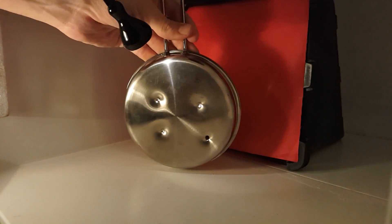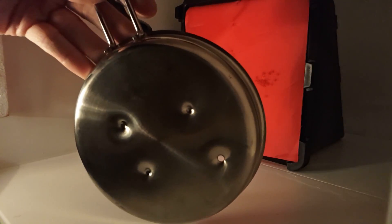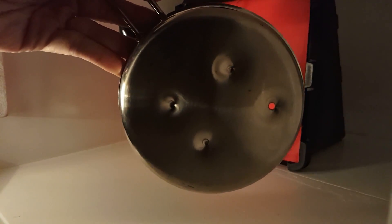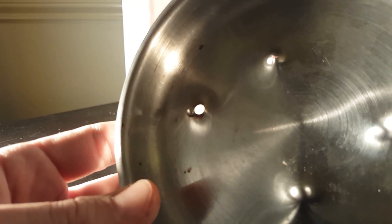Well, we got one of the pellets to penetrate the pan, and it made a very clean hole indeed. It peeled back a little tab of steel that I can't even bend back into place. Why didn't the other pellets make it through the pan?